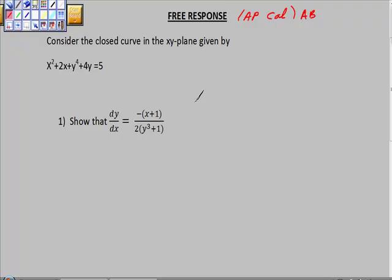So consider the closed curve in the xy-plane given by x² + 2xy + y⁴ + 4y = 5. Now look, what I would do first, to be honest with you, I would go back and put this right into my calculator and implicitly solve this. We know this is going to be implicit differentiation. So I would just test that, just to be clear about it, just to make sure that you're on the right track here.